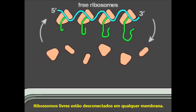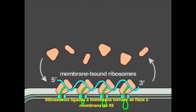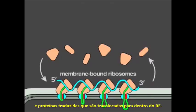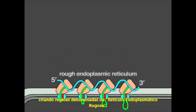Free ribosomes are unattached to any membrane. Membrane-bound ribosomes become riveted to the ER membrane and translate proteins that are translocated into the ER. These membrane-bound ribosomes coat the surface of the ER, creating regions called rough endoplasmic reticulum.